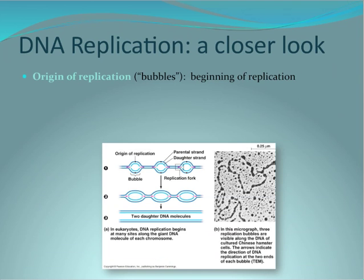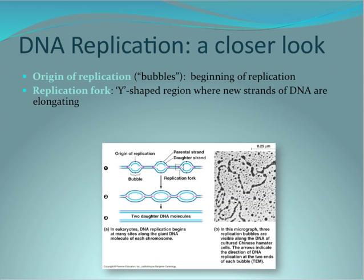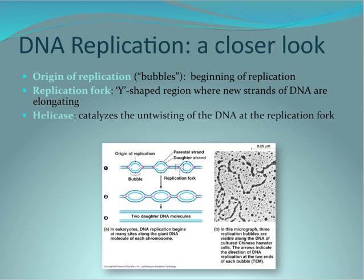At the origin of replication begins a formation of bubbles. This replication fork is the Y-shaped region where new strands of DNA begin to elongate. Helicase is the enzyme that first cuts open and untwists the DNA at the replication fork, along with topoisomerase, which unwinds the strands. Then it is the work of DNA polymerase which begins the elongation of DNA by adding free nucleotides to the template strand.